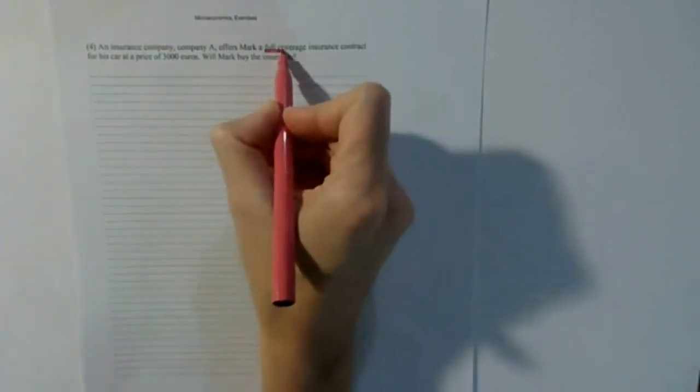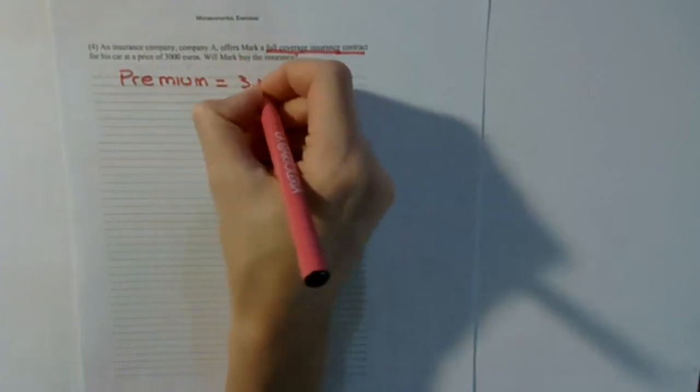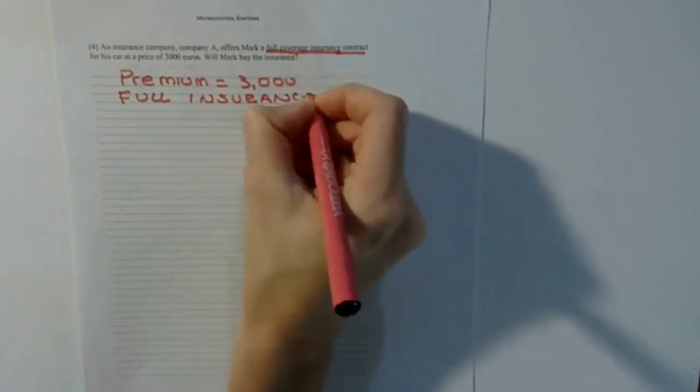From part 4 onward, the exercise involves insurance. Company A offers Mark a full insurance contract for his car at a price of 3,000 euros — so the premium is 3,000 and it is full insurance. We need to determine whether Mark will buy it or not. To do this, we compare Mark's utility in the case where he buys it versus the case where he doesn't.